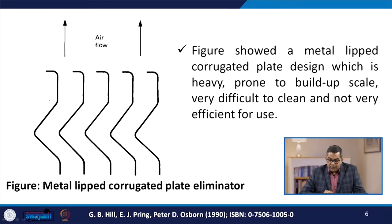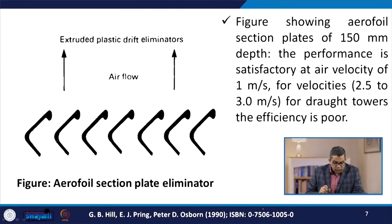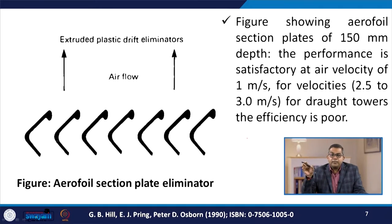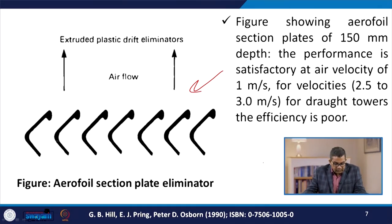This figure represents a metal-lipped corrugated plate design which is heavy, prone to scale build-up, very difficult to clean, and not very efficient. This is the metal-lipped corrugated plate eliminator. This next figure shows the aerofoil section plate eliminator. The aerofoil section plate of 150 millimeter depth gives satisfactory performance at air velocities of 1 meter per second, but for velocities ranging from 2.5 to 3 meters per second in draught towers, the efficiency is extremely poor.